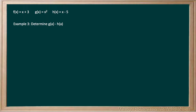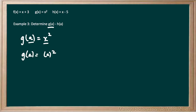Now we want to determine g of a minus h of a. We'll split it up and find g of a first. We know that g of x is x squared, so g of a also equals x squared. Replacing x with a, we have g of a equals a squared. Now we need to find h of a. h of x is given to be x minus 5, so h of a equals x minus 5, and replacing x with a gives us h of a equals a minus 5.